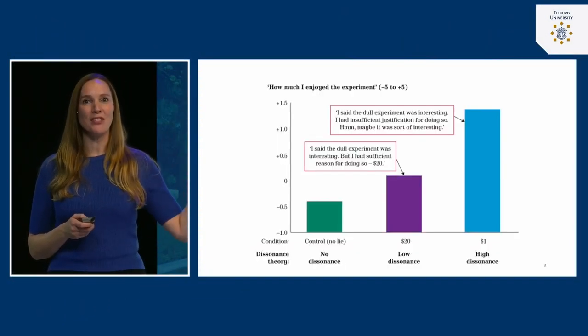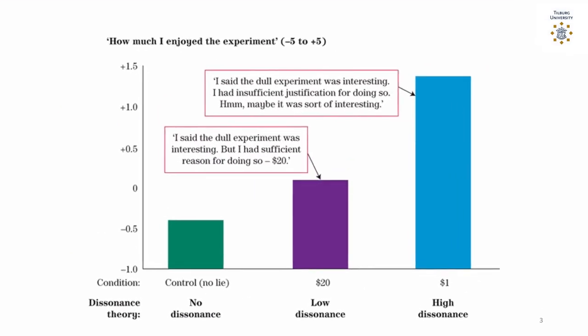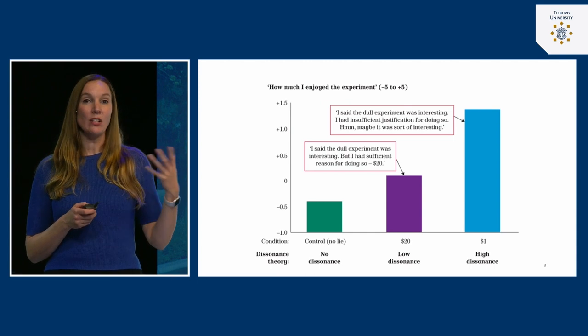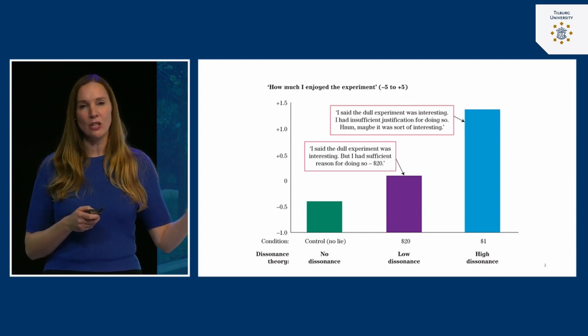Now let's look at the results of this study. In the no-dissonance condition, participants said they didn't enjoy the experiment — which makes a lot of sense because the experiment was not enjoyable. For people that experienced low dissonance — those paid $20 to tell the lie — they said they enjoyed the experiment a little bit more, but they also received $20, so they had sufficient justification to lie to the next participant.